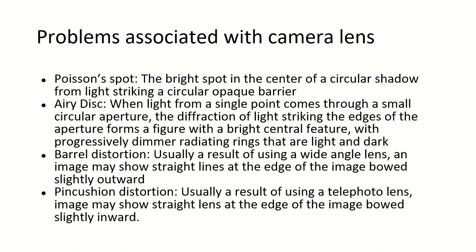Problems associated with camera lens. First is poison spot: the bright spot in the center of a circular shadow, because of light striking a circular opaque barrier. Airy disc: due to the diffraction of light striking the edge of the aperture, it creates radiating rings that are light and dark in color. Barrel distortion: usually in the case of wide-angle lens, the image will show straight lines at the edge bowing slightly outwards. In pin-cushion distortion, the image bows inwards, whereas in barrel distortion it bows outward.